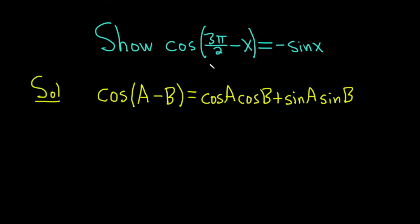Now let's go ahead and write down the left-hand side of our equation. So we have the cosine of 3π/2 minus x. And that's equal to, you can see here, a is going to be 3π/2 and b is going to be x. So this is the cosine of 3π/2 times the cosine of x.